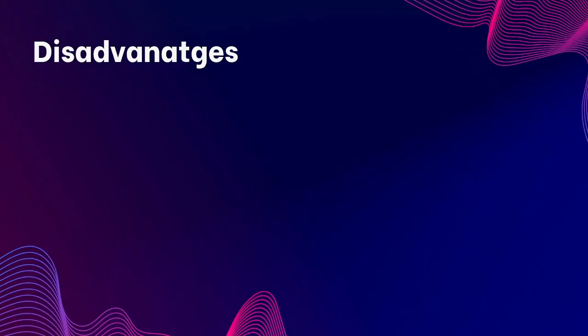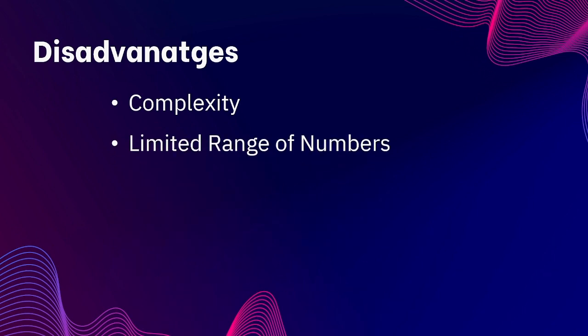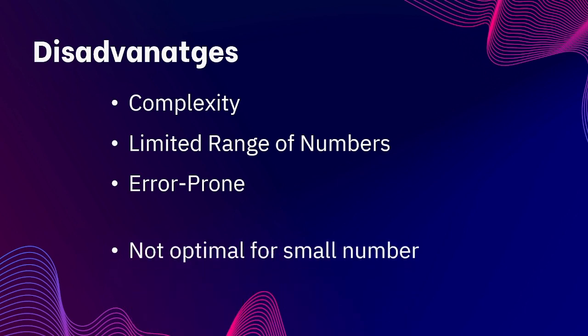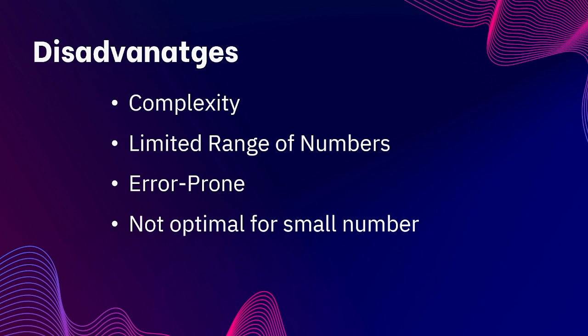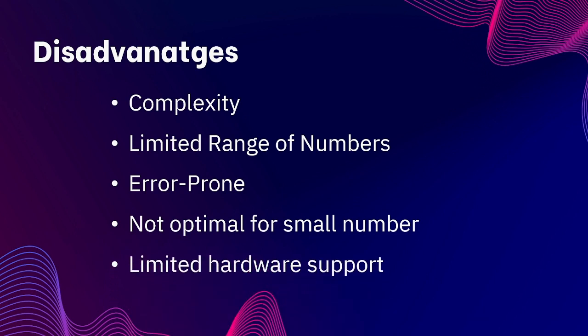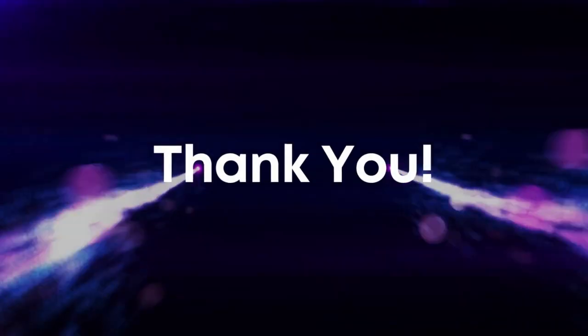Disadvantages of Booth's algorithm: First, complexity — it is more complex than other multiplication algorithms. Second, limited range of numbers — it is designed for signed binary numbers, limiting the range it can multiply. Third, error prone — it requires careful handling of the sign bit and can be prone to errors if not implemented correctly. Fourth, not optimal for small numbers — it is designed for large numbers. Fifth, limited hardware support — it requires special hardware to implement efficiently, which may not be available in all systems.